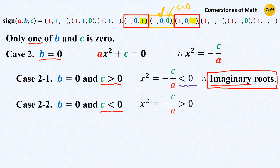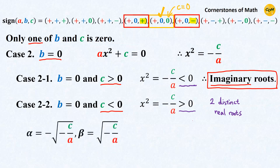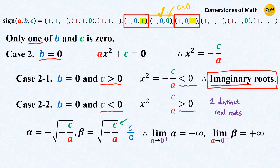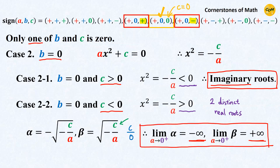When c is negative, x squared becomes positive, so we have two distinct real roots. Since c remains constant, we have a constant divided by 0 expression. Therefore, as a approaches 0 from the right, alpha goes to negative infinity and beta goes to positive infinity. So those are all cases where the coefficient b is 0.